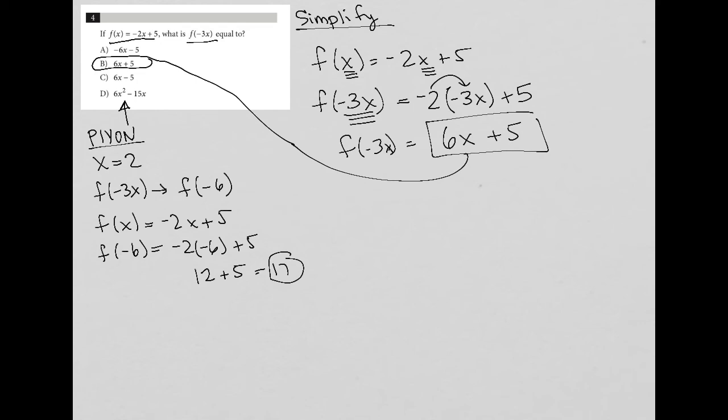I then take that answer, that 17, and say, okay, which one of my answer choices, when I plug in that same x equals 2, will give me a positive 17? So when I try choice A, I get negative 6 times 2 minus 5, and that would give me negative 17. So that's not equal to positive 17. And then B, 6 times 2 plus 5 does give me positive 17. And that's how I know that it is the correct answer.